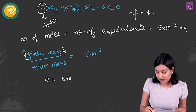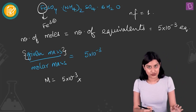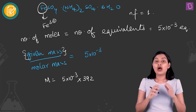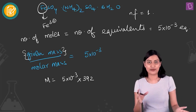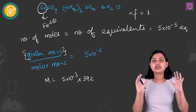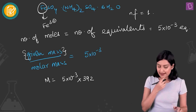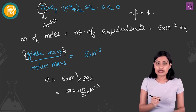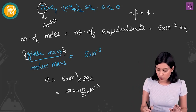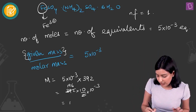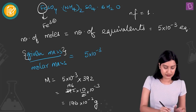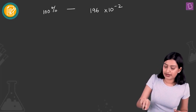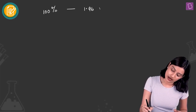The given mass M = 5 × 10⁻³ moles × 392 g/mol, the molar mass of Mohr's salt — a very important number to remember. That gives 392 × 10 / (2 × 10³) = 1.96 grams. So at 100% purity, you would need 1.96 grams of Mohr's salt sample.